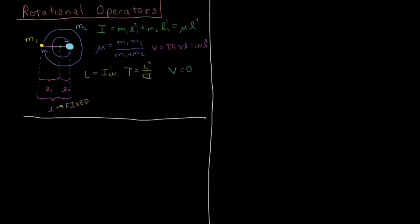We're going to set up the Schrödinger equation for the rigid rotor model. We have a diatomic molecule with two atoms, one of mass M1 and one of mass M2. They both rotate around a common center of mass, each a certain distance away from it, L1 and L2. The sum of those two distances is the total bond distance L, which is fixed — thus the name the rigid rotor.